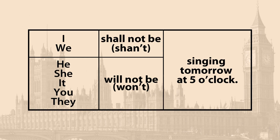В отрицательных предложениях к will или shall добавляется отрицательная частица not. Не забывайте, что сокращённая форма здесь образуется особым способом: will not → won't, shall not → shan't. Также мы используем глагол to be в неопределённой форме и окончание -ing. Например: I shall not be singing tomorrow at five o'clock. Or: I shan't. You will not be singing tomorrow at five o'clock. Or: You won't. She will not be singing tomorrow at five o'clock. Or: She won't. То же самое касается и всех остальных местоимений.